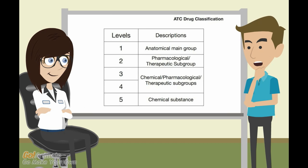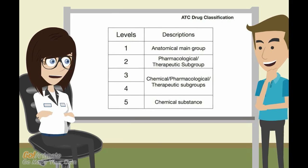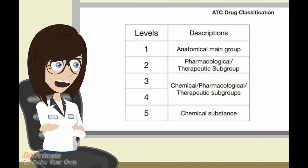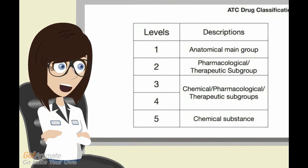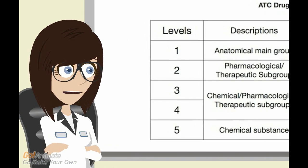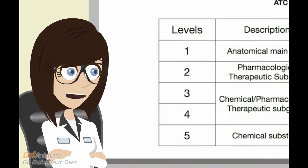Then in levels 3, 4, and 5, the pharmaceutical substance is further classified into their respective chemical subgroups. Now let's see one example using all five levels of the ATC classification system.